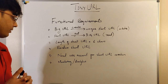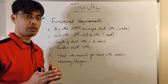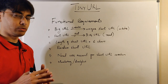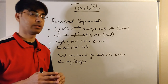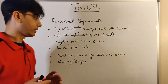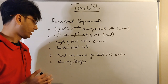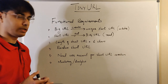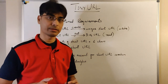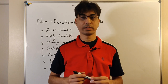The sixth requirement is that we would like some sort of monitoring or analytics component in our service to monitor the overall health of the service and also to monitor different metrics, for example the number of reads or writes per second happening in the service. These are the functional requirements for the TinyURL service.